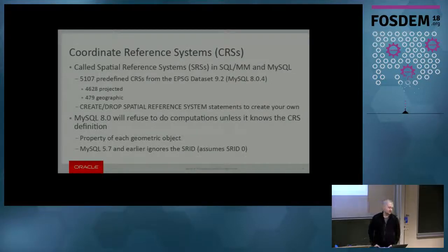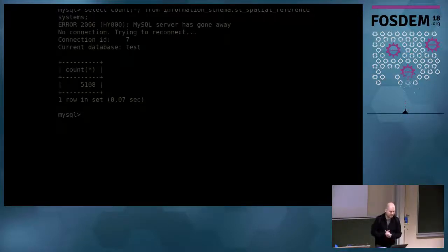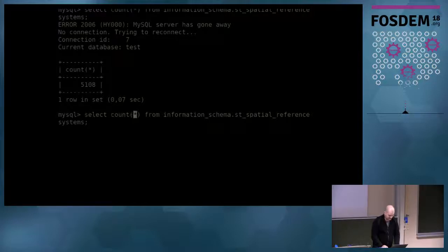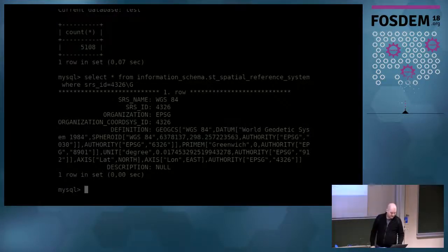MySQL now supports several spatial reference systems — we didn't before. This is the first version where we actually have a table of reference systems. We have 5,108 reference systems in MySQL. We can look at one of them — this is the GPS coordinate system. I'll get back to that, but let me switch back to the slides for a bit.